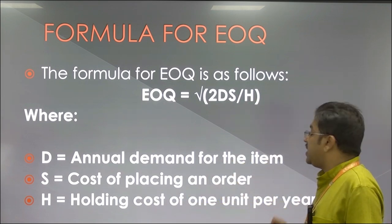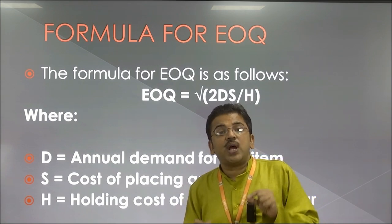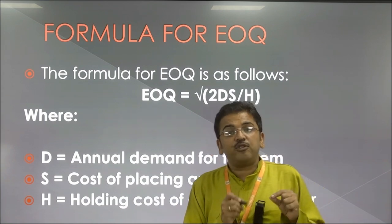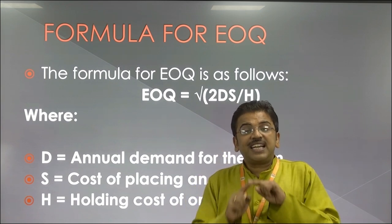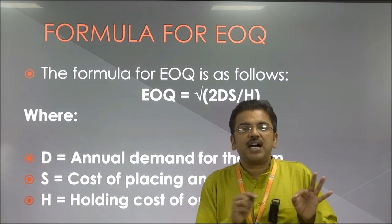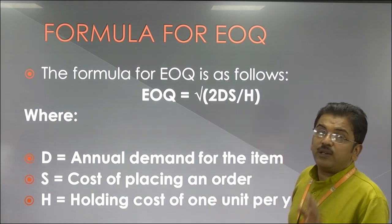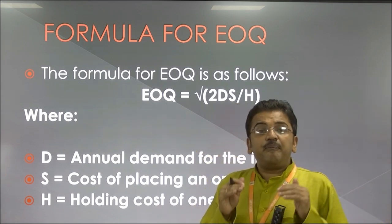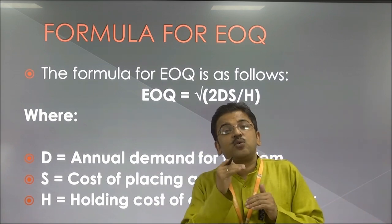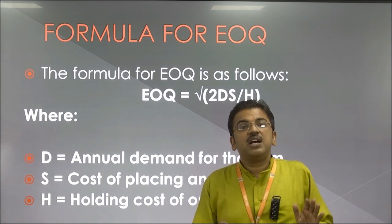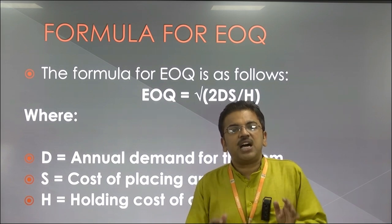H is the holding cost of one unit per year — if you make a product and have to keep that final product in a warehouse or send it to market, what is the cost for that specific single product for that specific year to be kept in a warehouse or sent to market. Whenever we calculate this, we get our Economic Order Quantity — the best quantity and best price at which to order — so that our business achieves maximum utilization of resources and we get the best MRP for our product.